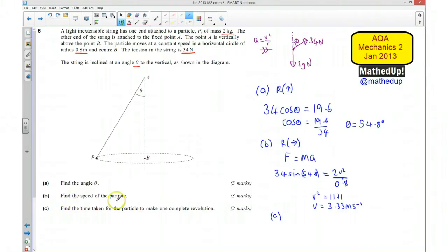For part C we're asked to find the time taken for the particle to make one complete revolution. Because the particle moves at a constant speed as it goes around the circle, speed equals distance over time.